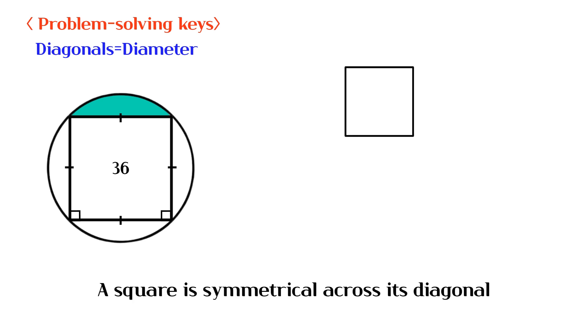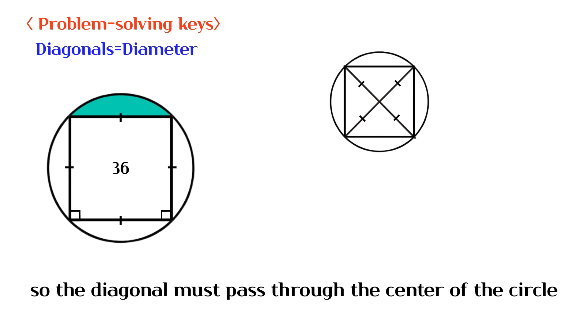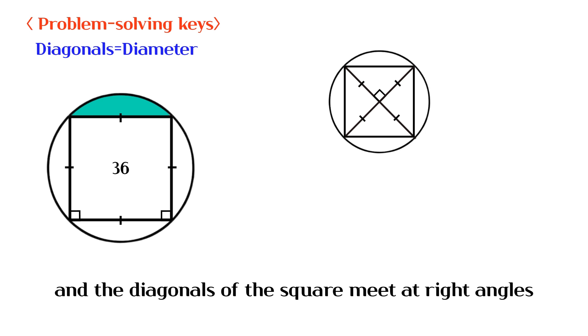A square is symmetrical across its diagonal. So the diagonal must pass through the center of the circle. And the diagonals of the square meet at right angles.